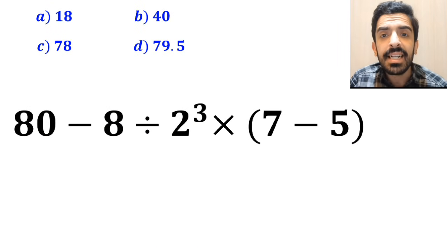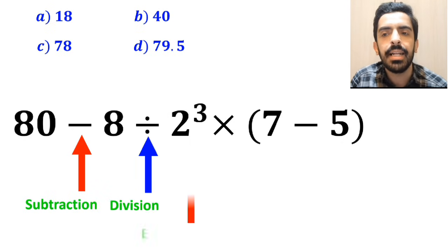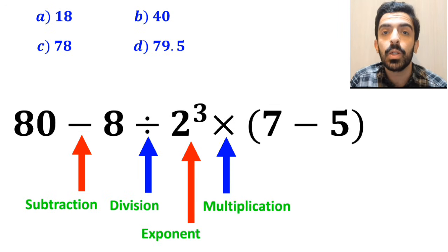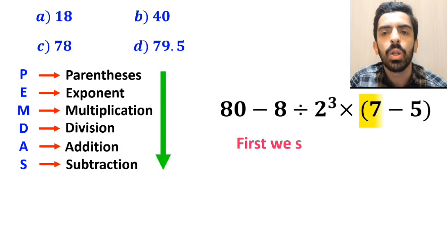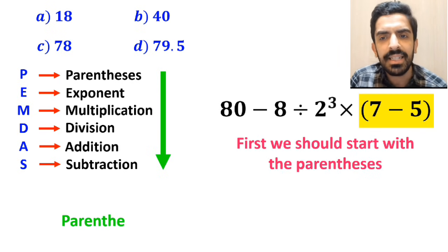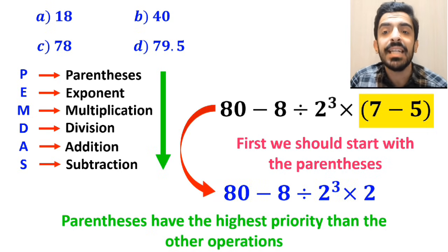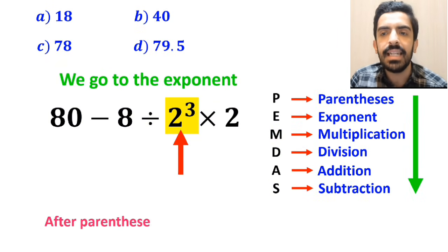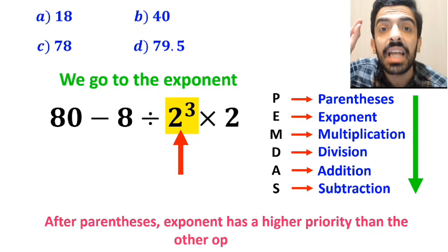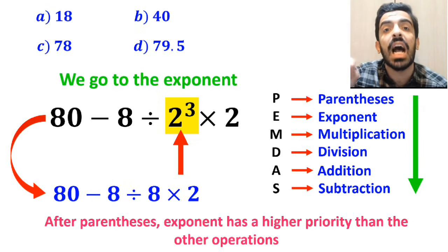As you can see in the image, in this expression, first we have a subtraction sign, then a division sign, and after that we have an exponent, then a multiplication, and finally parentheses. According to the PEMDAS rule, first we should start with the parentheses, because parentheses have the highest priority. So we can rewrite this expression as 80 minus 8 divided by 2 to the power of 3 times 2. In the next step, we go to the exponent, because after parentheses, the exponent has higher priority. So this expression simplifies to 80 minus 8 divided by 8 times 2.